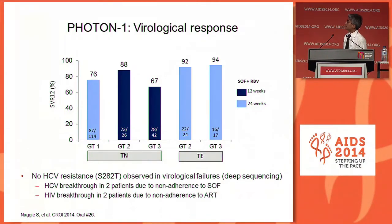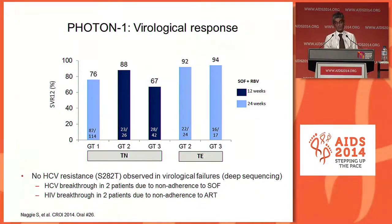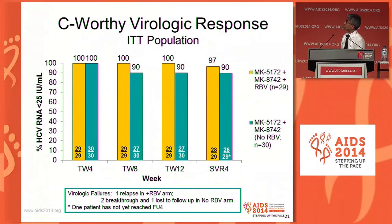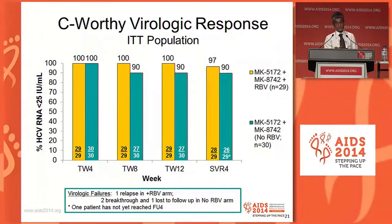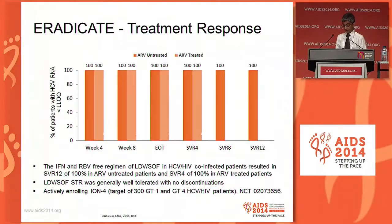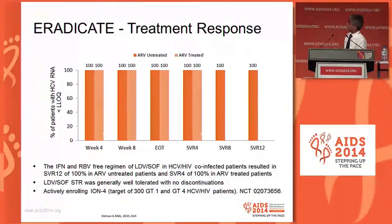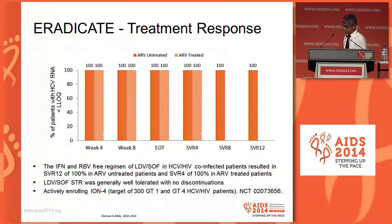Looking at results: PHOTON1 showed 80 to 90% SVRs in treatment-naive and treatment-experienced patients, except in genotype 3 patients at 12 weeks, which wasn't enough for interferon-free therapy. The C-WORTHY intention-to-treat analysis at SVR4 showed over 95% sustained virological responses with two drugs combined plus or minus ribavirin for 12 weeks. The ERADICATE study with fixed-dose sofosbuvir and ledipasvir showed, in preliminary data, almost 100% response across the board. We've clearly come to the next step in DAA-based therapy for co-infected patients.